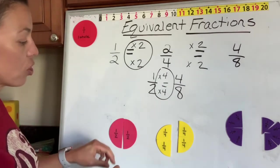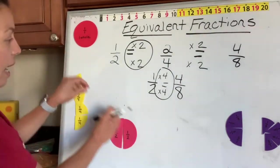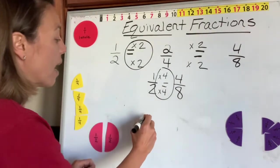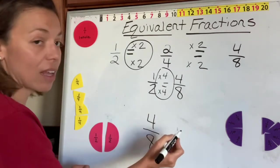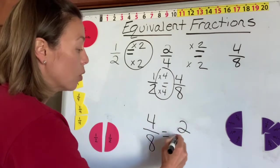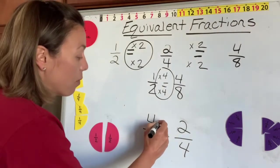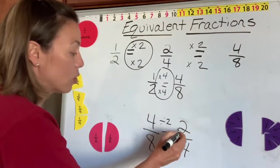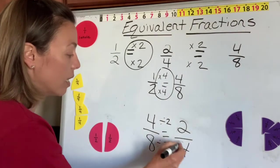Now I want to show you the same case holds true if we divide. So if we have four eighths and we're saying that four eighths is equal to two fourths, then we can say four divided by two equals two and eight divided by two equals four.